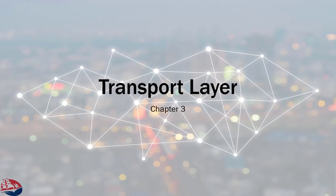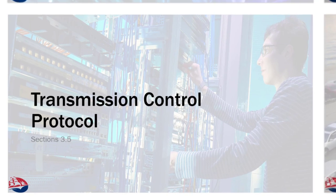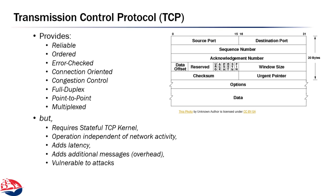Welcome to Computer Networks, Chapter 3, Part 3: the Transmission Control Protocol. In this part of the chapter, we're going to take a pretty deep dive into TCP. When we looked at UDP, we found it was really quite simple. TCP, because it is trying to offload a bunch of tasks from the application layer, is necessarily more complex. It provides more service, so it has to keep track of more state and exchange more information.